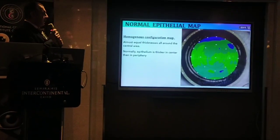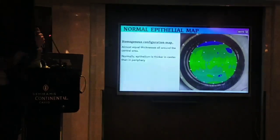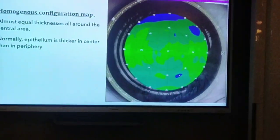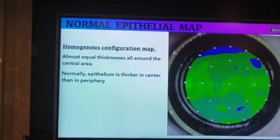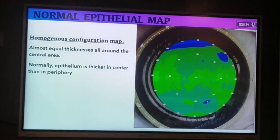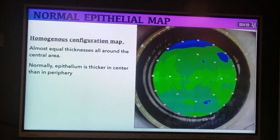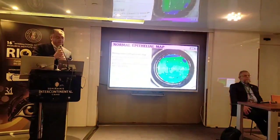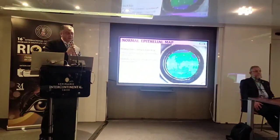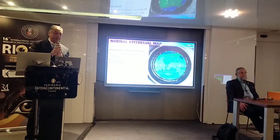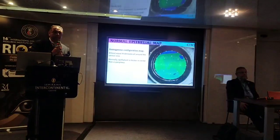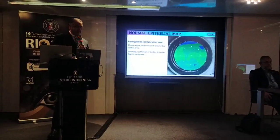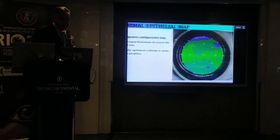This is an example of a normal epithelial map, where the epithelial thickness is homogenous all around, especially in the central part of the cornea — almost equal thicknesses all around the central area. Normally, the epithelium is thicker in the centre than in the periphery, which is the opposite of corneal thickness.